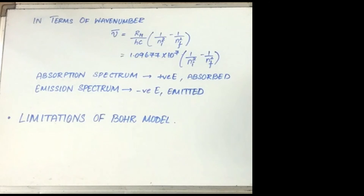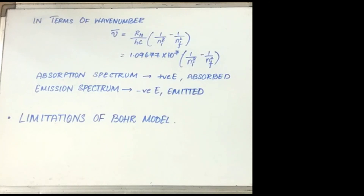In terms of wave number — in case of absorption spectrum, N_f is greater than N_i and the term in parenthesis is positive, so energy is absorbed. In case of emission spectrum, N_i is greater than N_f and the term in parenthesis is negative, so energy is released. The delta E value given by 2.18 × 10⁻¹⁸ joules × (1/n_i² minus 1/n_f²) is similar to the equation nu-bar equal to 109677 × (1/n1² minus 1/n2²) derived by Rydberg empirically using experimental data.